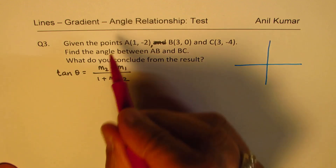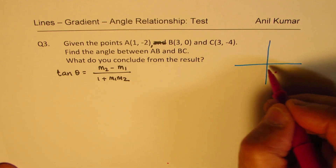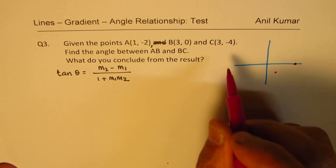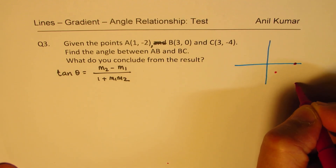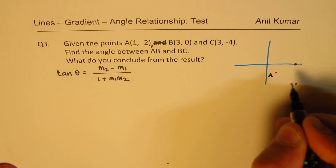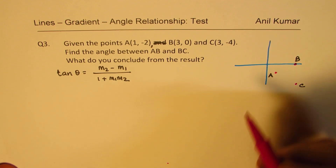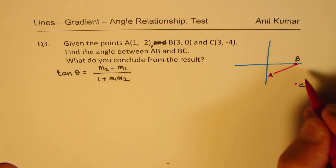The points are: A at (1, -2), somewhere here; B at (3, 0), which is on the x-axis; and C at (3, -4). So these are my points. We need to find the angle between line AB and line BC.